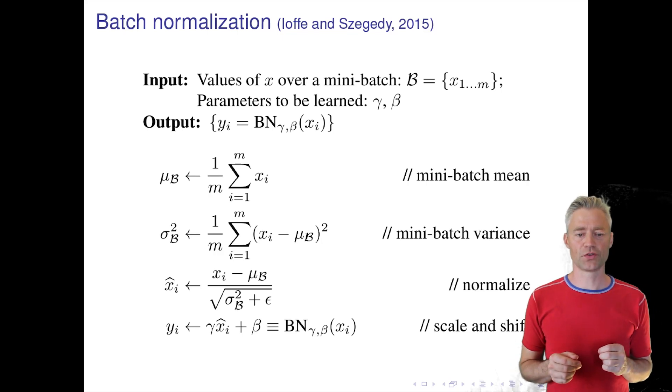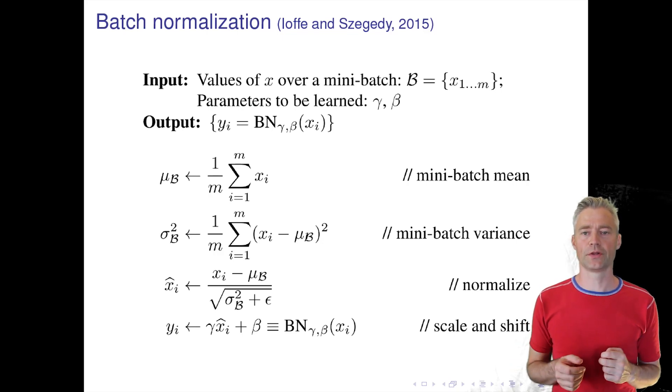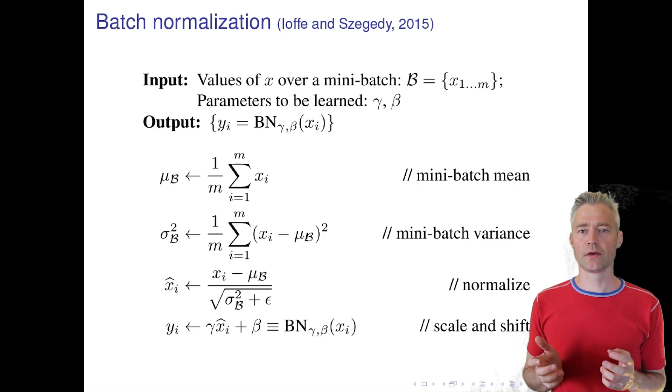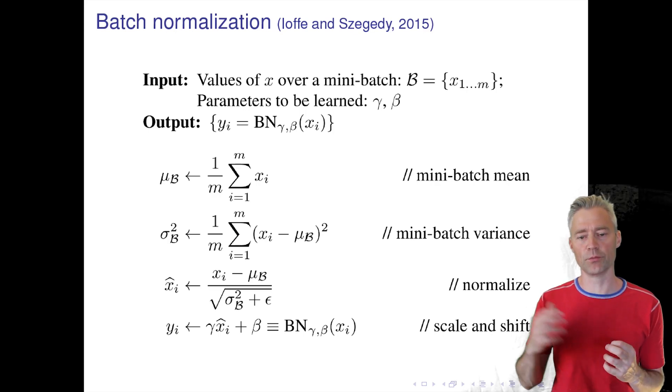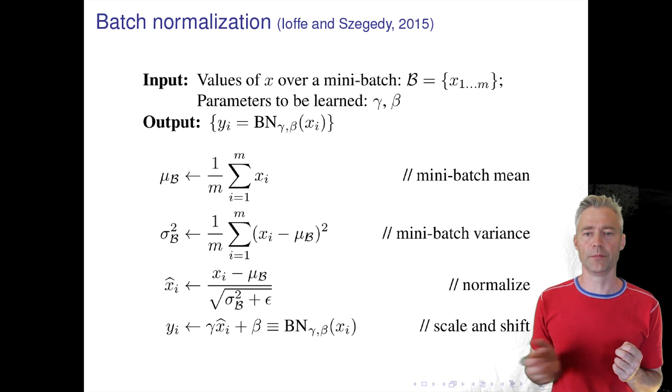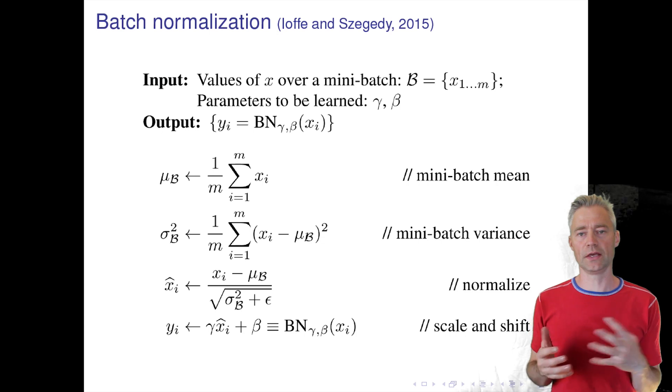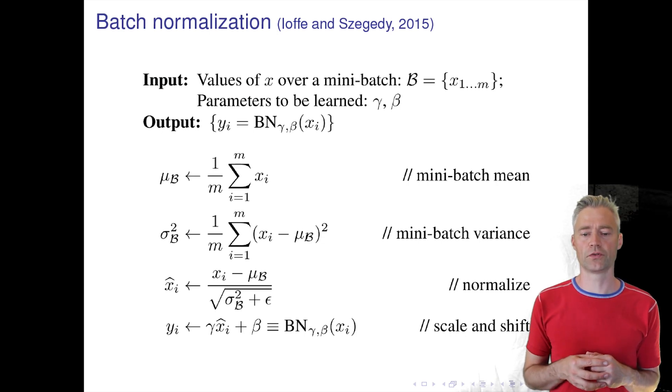Another technique which has made a big difference in practice is called batch normalization, and the idea comes from the normal standardization we perform on input features. There we have always taken our features and removed the mean and in many cases also divided by the standard deviation such that each input feature is approximately a standard normal distributed variable.